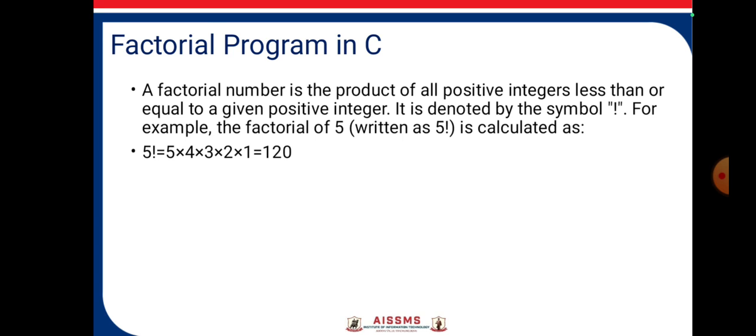A factorial number is the product of all positive integers less than or equal to a given positive integer. It is denoted by the factorial symbol. For example, the factorial of 5, written as 5!, is calculated as 5×4×3×2×1, which equals 120.